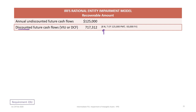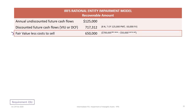We now have eight periods remaining — the original ten minus two years elapsed. At 7% interest with a $125,000 payment and the $50,000 cost to sell entered as a negative FV, we get a present value of $717,312. The fair value is $700,000 and the cost to sell are $50,000, so fair value less cost to sell is $650,000.